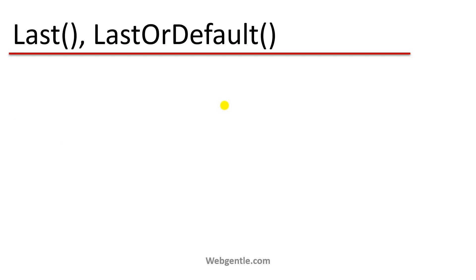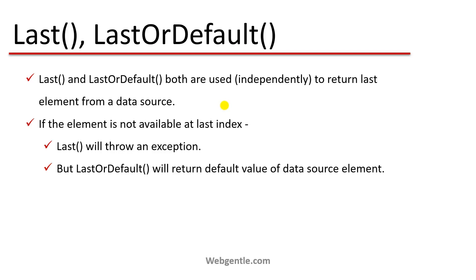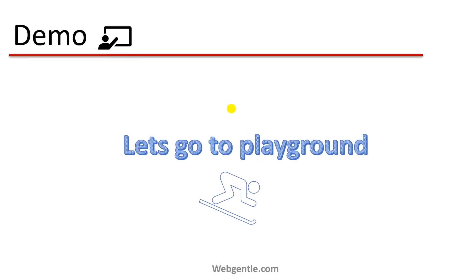Last and LastOrDefault both methods are used to return the last element from a data source. If the element is not available at the last position — suppose you are searching for the last element and because of some conditions that element does not exist — if you use the Last method it will throw an exception, but if you use LastOrDefault you will get the default value of the element type.